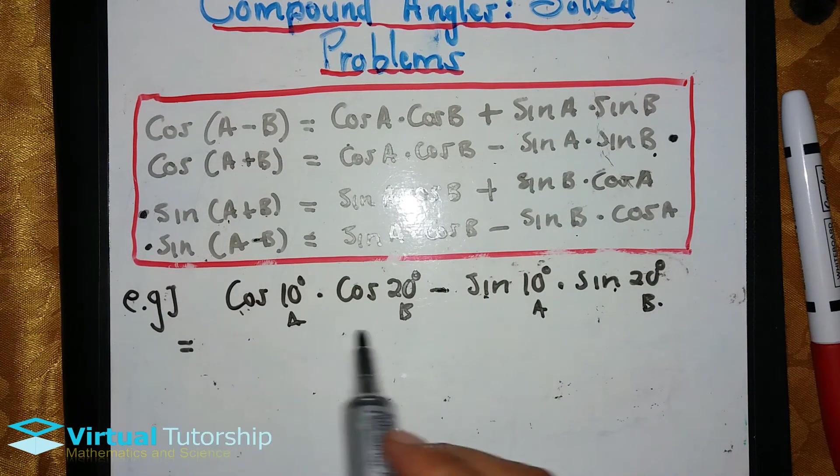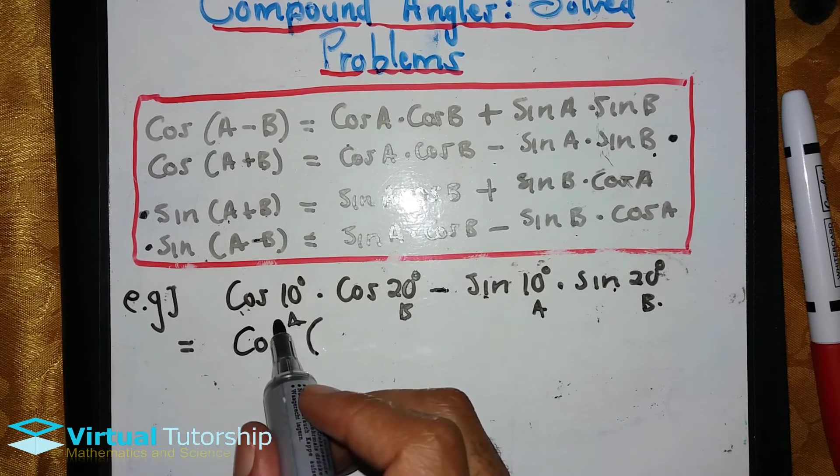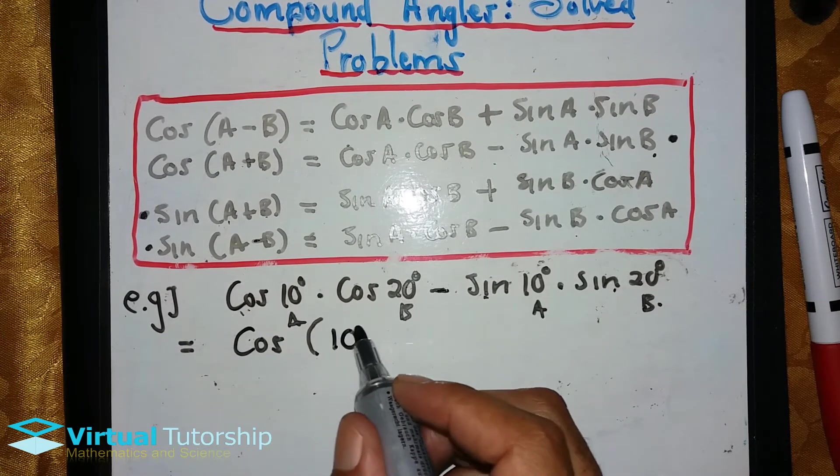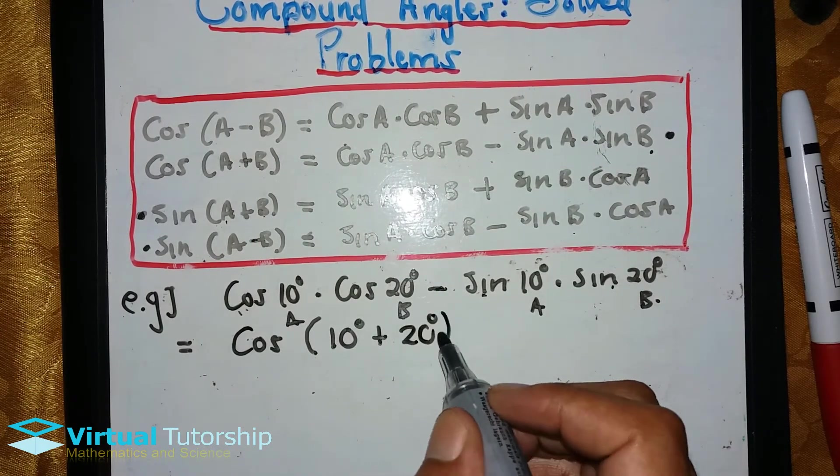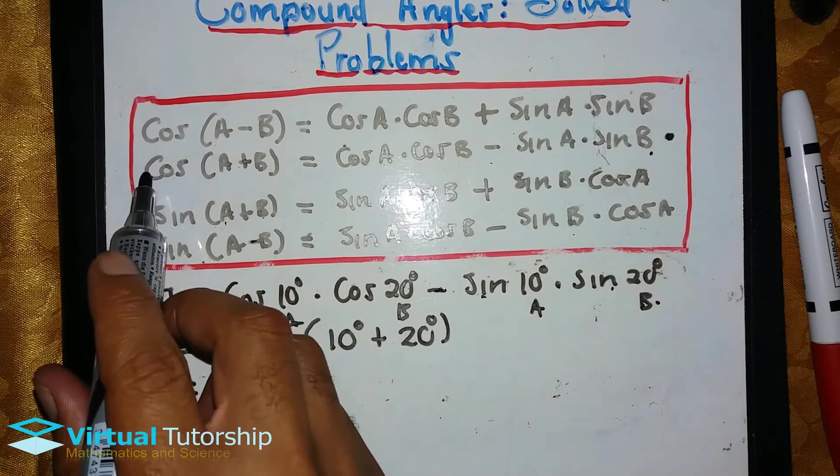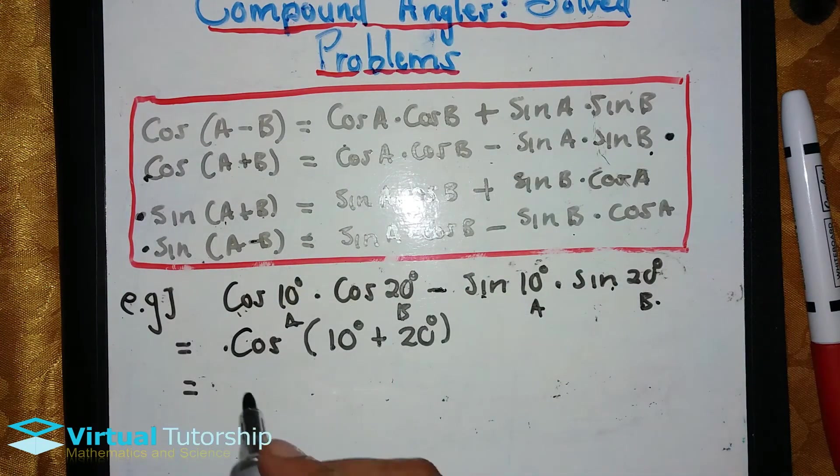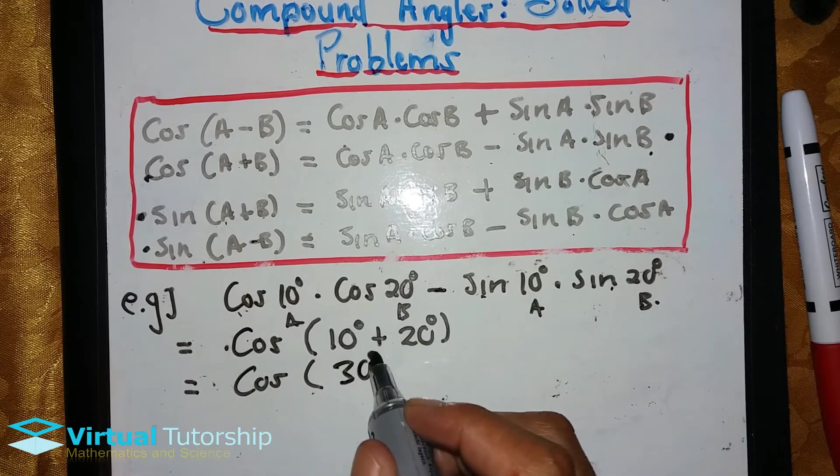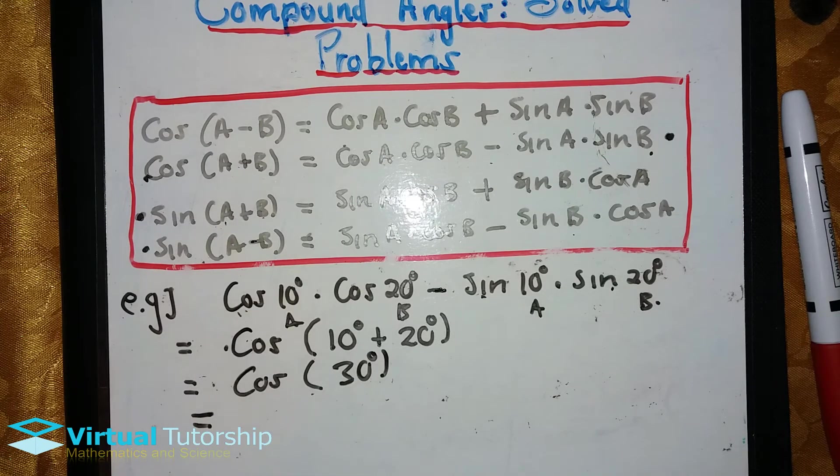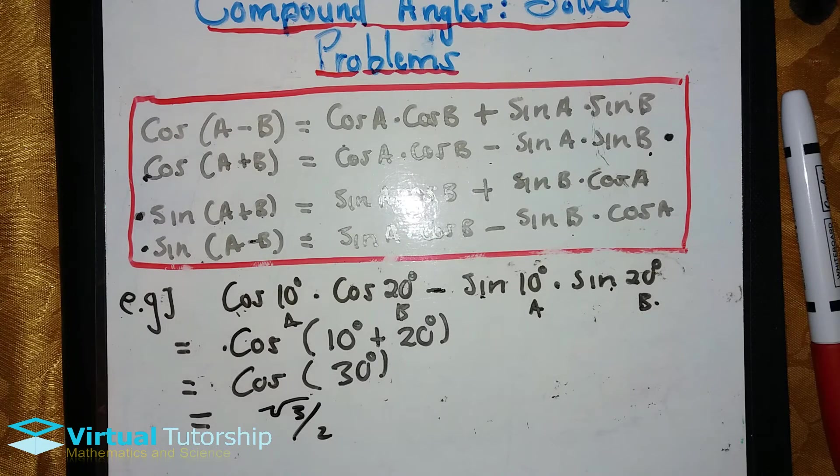So this one, simplifying, we rewrite as cosine. A is 10 degrees, so it's going to be 10 degrees plus B, which is 20 degrees. So we apply the compound angle formula. It's important to work in both directions. What about the 10 degrees and the 20 degrees? We get 30 degrees. And cosine 30 degrees is square root of 3 over 2. The 30 degrees is a special angle.